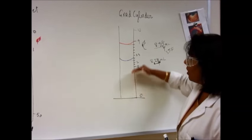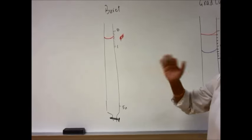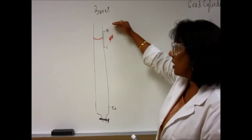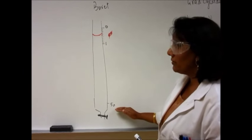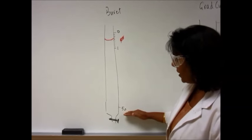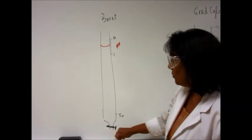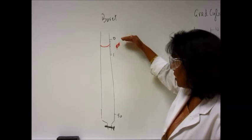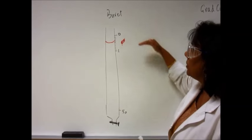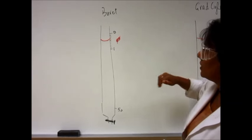When you come to a burette, however, things are upside down. Zero starts from the top and then 50 or 25, whatever size burette you have, that larger number is going to be down here because you're releasing the liquid from the tip of the burette. Zero is on the top and 50 is at the bottom, which means you read the burette top down instead of bottom up.